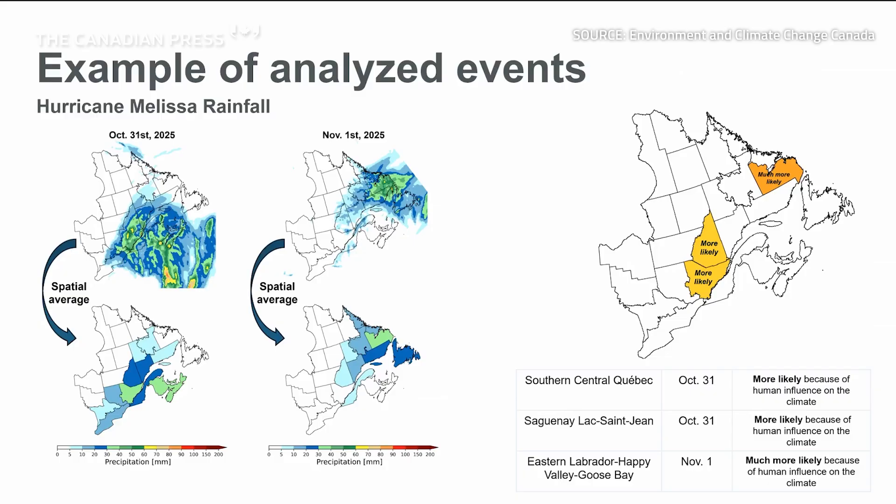If the climatological value is surpassed, an event is detected and a reattribution study is performed. If the climatological value is not surpassed, we do not have an extreme event.